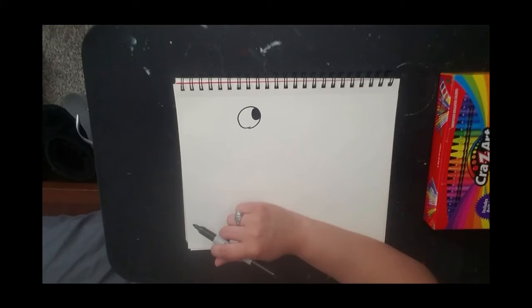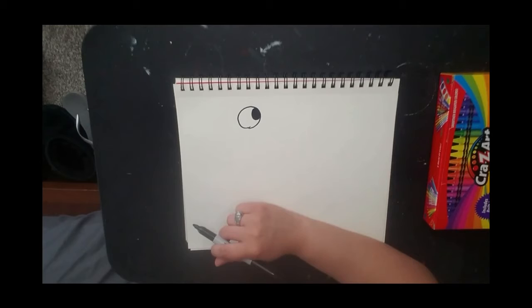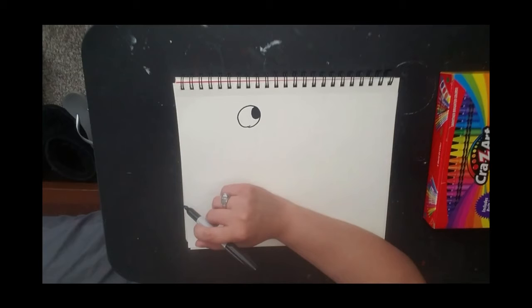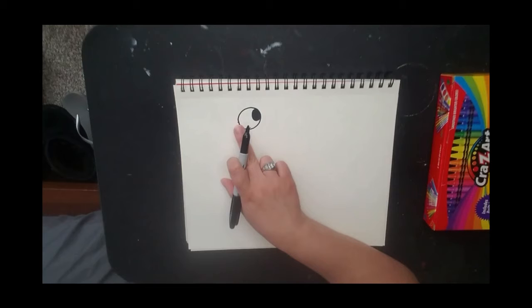Now it's time to start drawing his body. First grade and kindergarten, you guys should know your lines, especially kindergarten. Kindergarten are some line detectives. So we are going to use zigzag line. Now watch what I do. I'm going to go to the back end of my eyeball and I'm going to do a zigzag line.